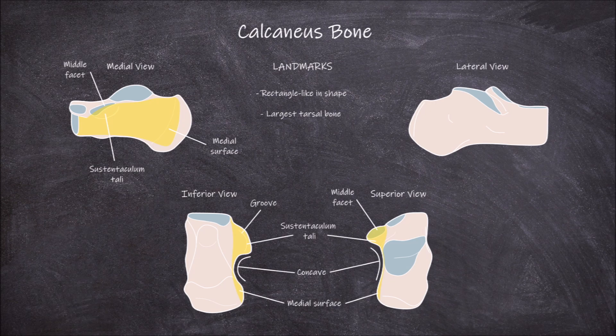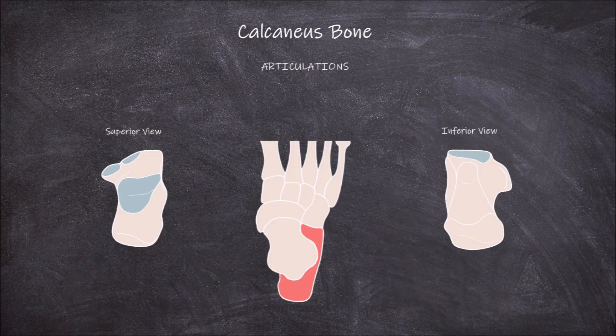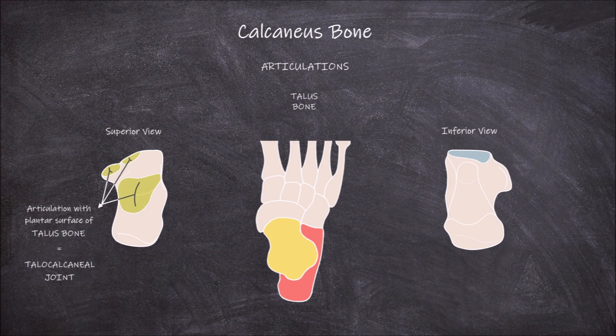Now we are going to take a closer look at the bones the calcaneus bone articulates with. This bone articulates with two other bones. The first of these articulations is with the talus bone. Three superior articular surfaces — the anterior tala articular surface, the posterior tala articular surface, and the middle tala articular surface — articulate with facets on the plantar surface of the talus bone. This articulation forms the talocalcaneal joint.